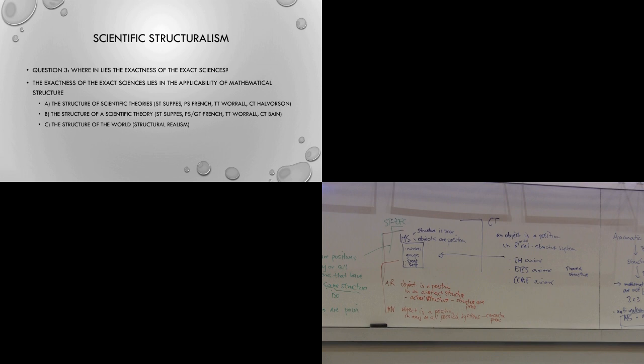We can also talk about the structure of a single scientific theory — the structure of quantum mechanics, the structure of a space-time theory. Again, Suppes uses set theory for this; French uses partial structures in one version and group theory in another; Worrell sticks with type theory; Bain, more recently, has argued for the use of category theory and group theory in space-time theories. And then finally we say the exactness of the exact sciences lies in the applicability of structure when we're talking about the structure of the world — and that's the claim of the structural realist.